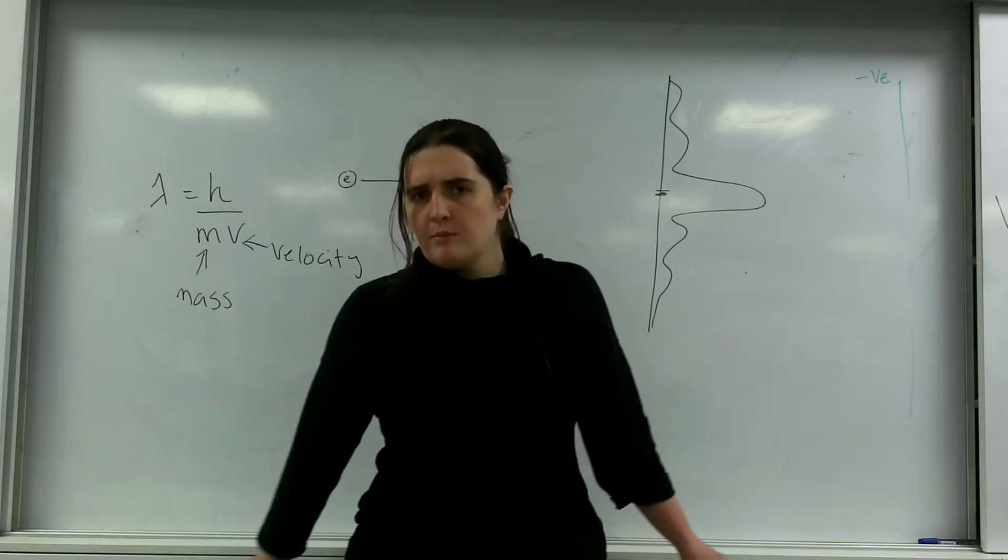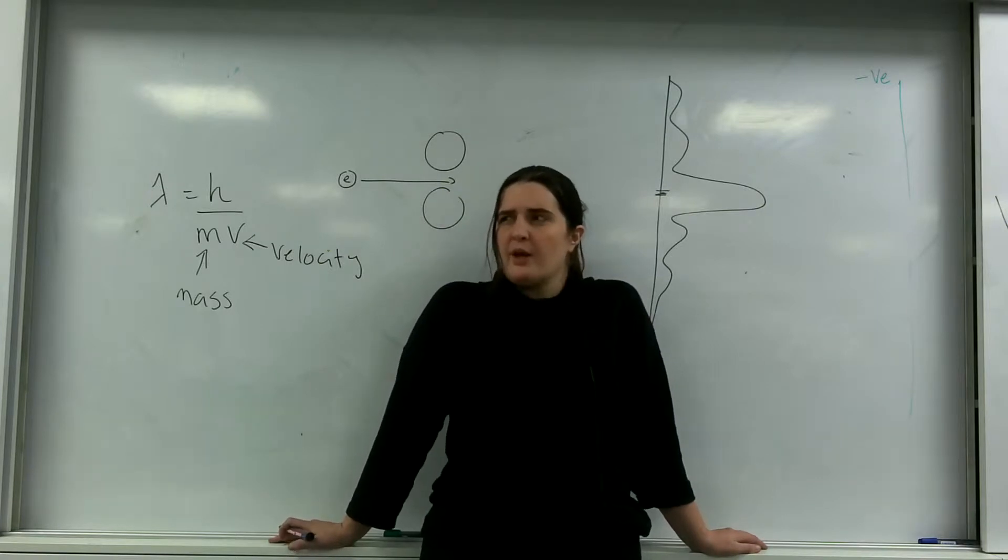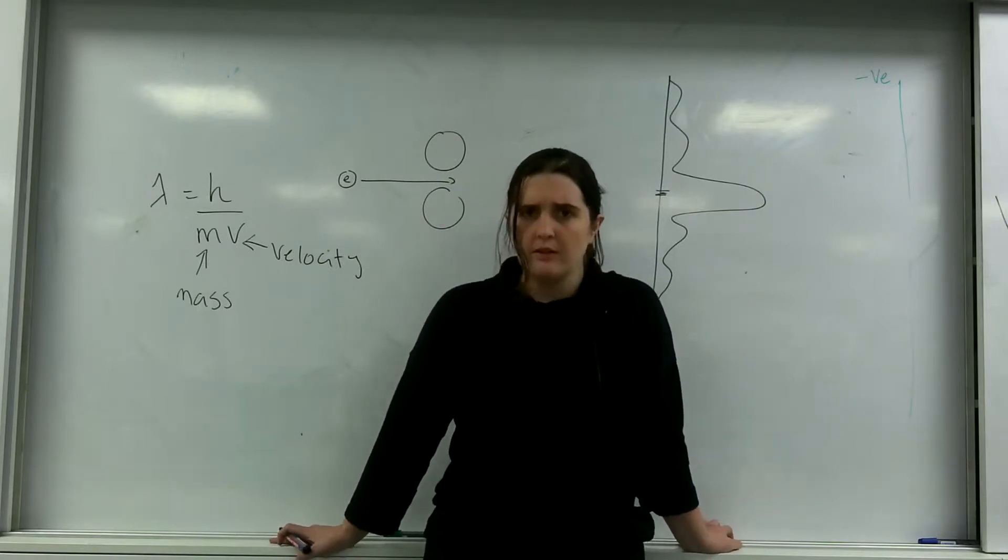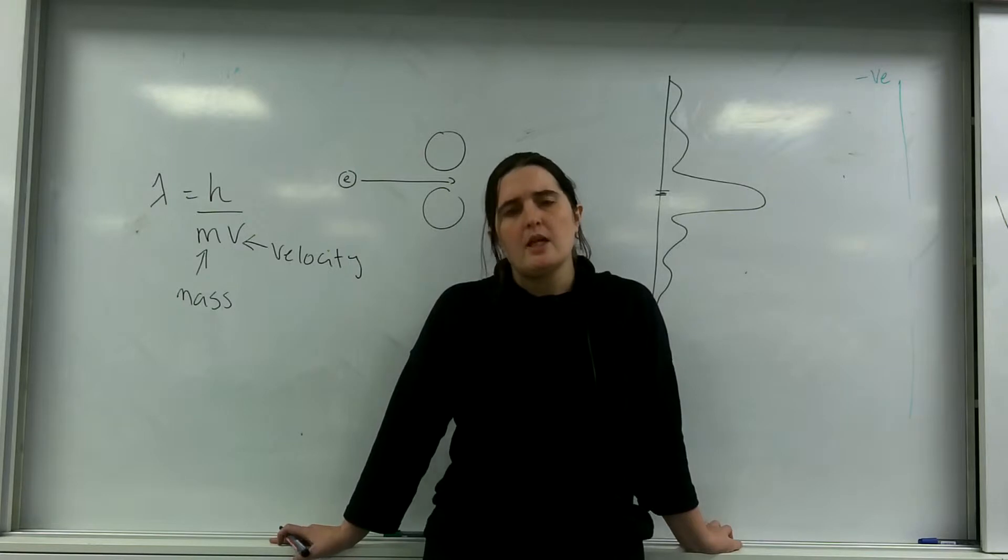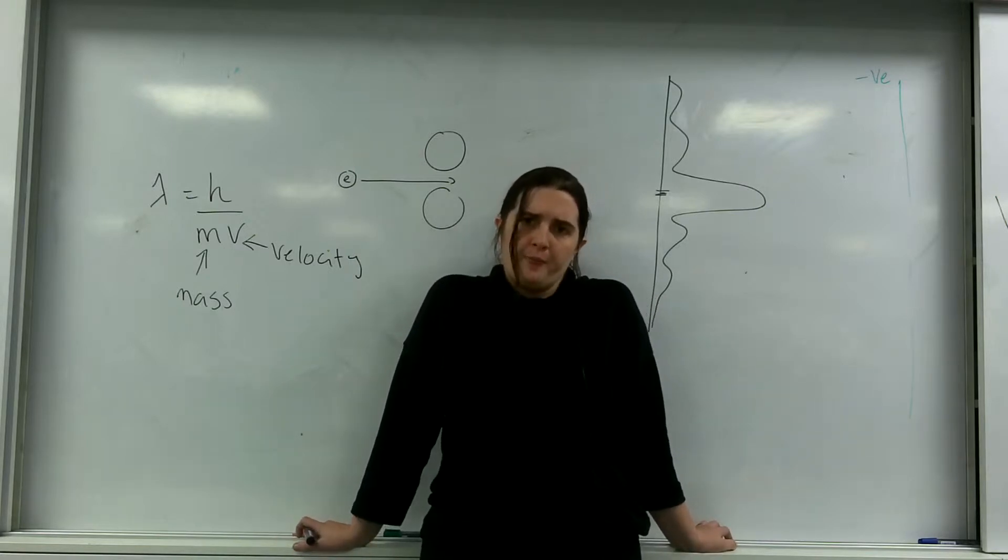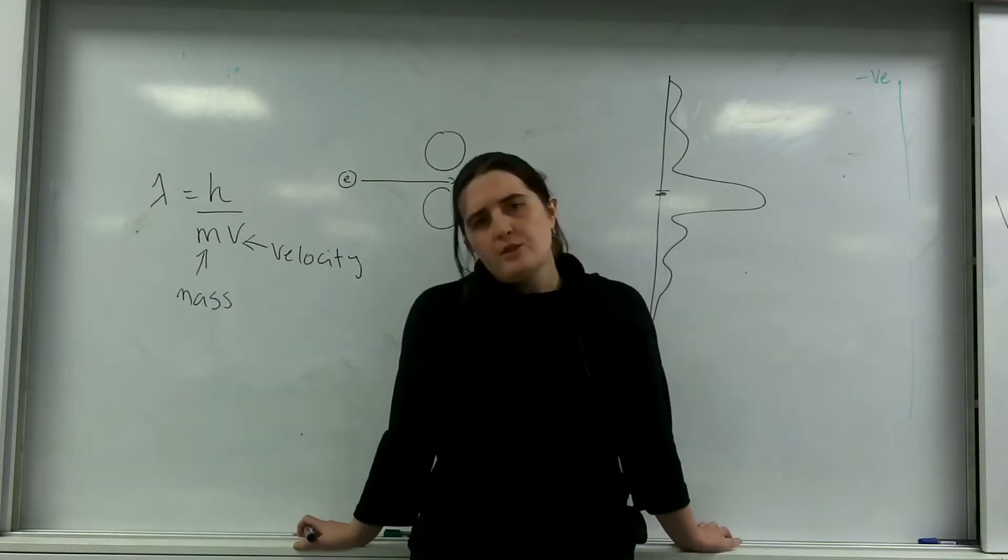De Broglie did some calculations and he worked out that everything has a wavelength. Every object has a wavelength when it is traveling. And this is the formula here.